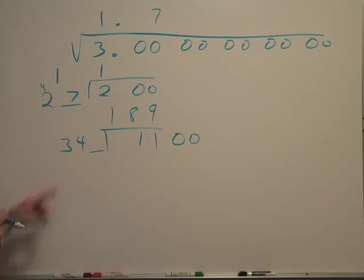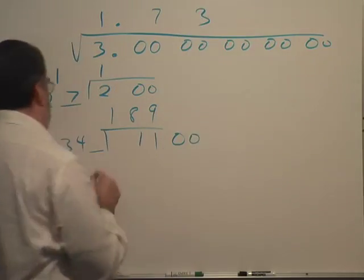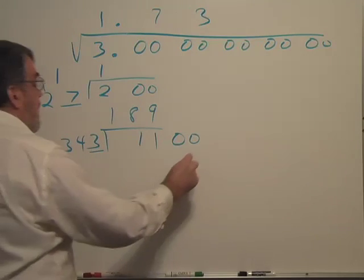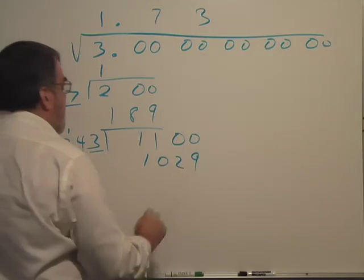340-something divides into 1100 about three times, so I'm going to put 3 here and then multiply 3 times 343. I get a 9, 12, 10, 1029.